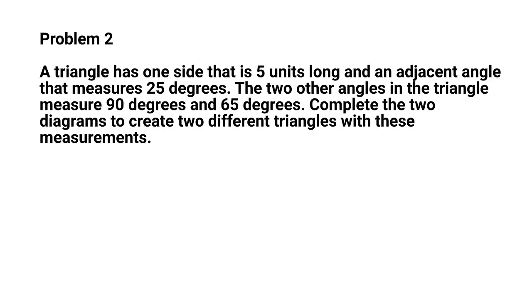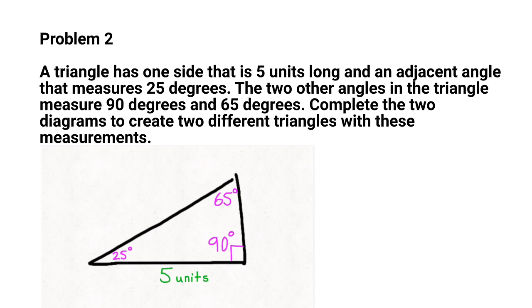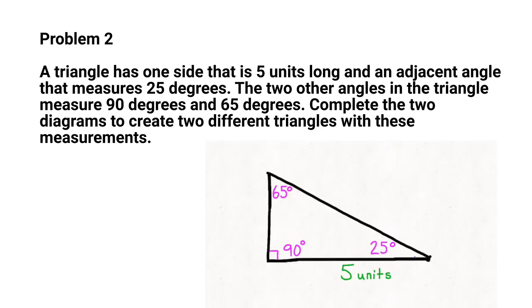Problem number two: a triangle has one side that is five units long and an adjacent angle that measures 25 degrees. The two other angles in the triangle measure 90 degrees and 65 degrees. Complete the two diagrams to create two different triangles with these measurements. I decided to use two triangles that are mirror images of themselves, each with 90 degrees, 25 degrees, 65 degrees, and the five unit side length.